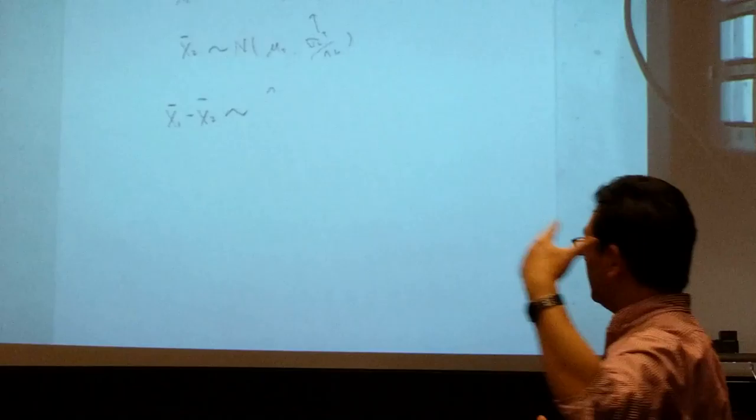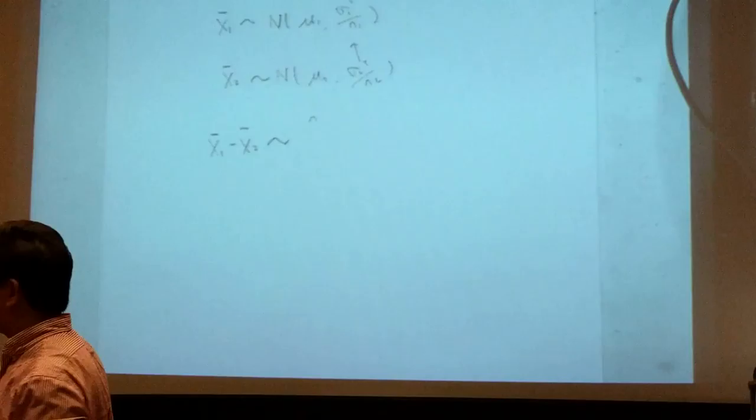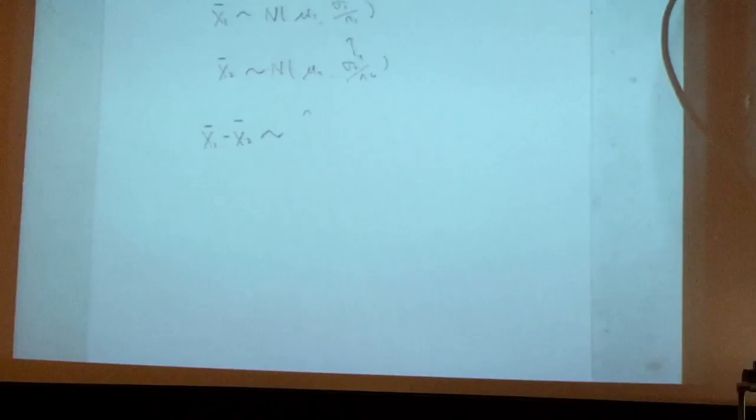The second mean, so the sampling mean from the second population. The second population, it actually is what? It's another normal. I have this one, okay, not the difference. What is the distribution for this difference?